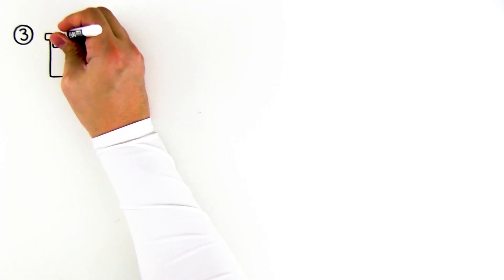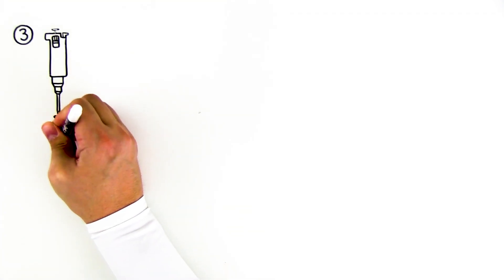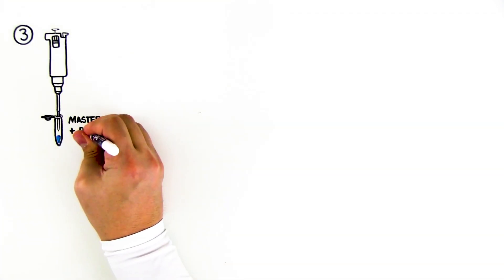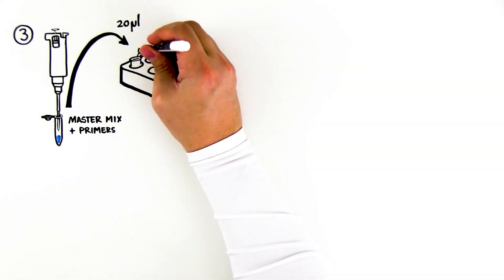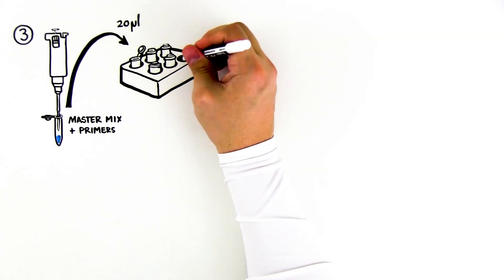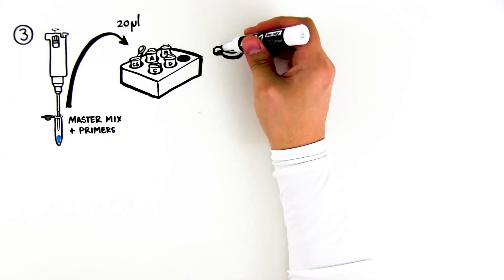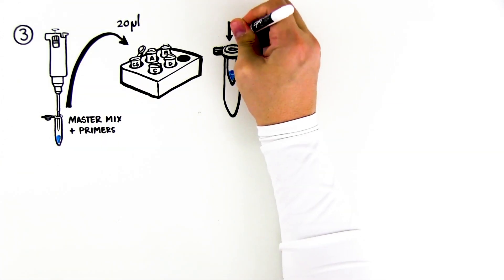Step 3: Transfer 20 microliters of the blue master mix plus primers into each of the 5 PCR tubes containing template DNA. After adding the master mix, gently pipette up and down to mix the blue master mix and DNA.